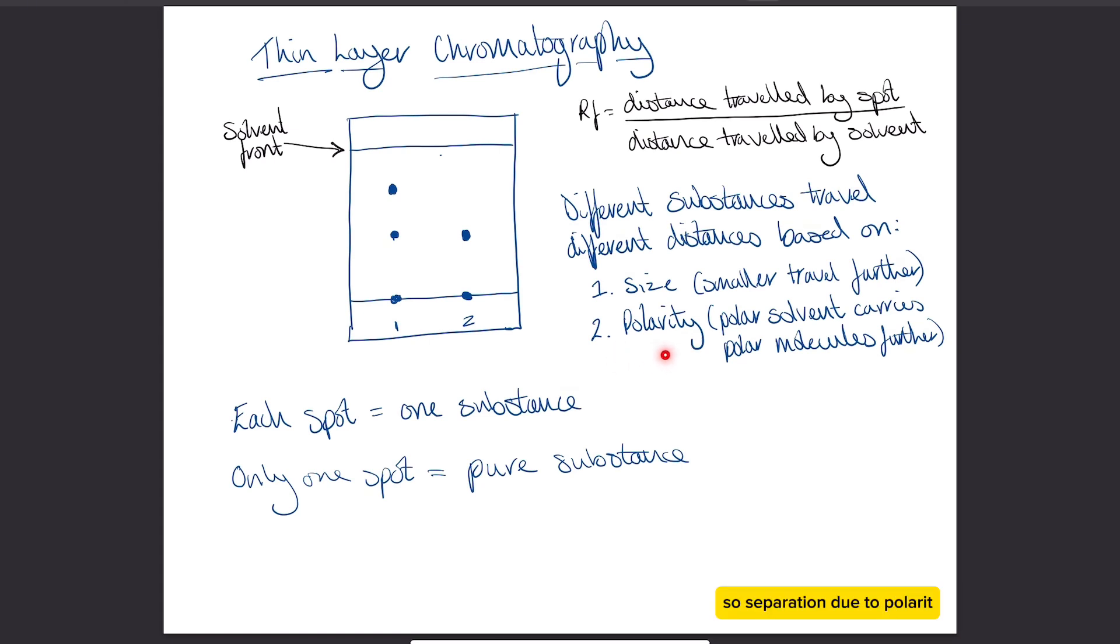Separation due to polarity is really dependent on what your solvent mix was. If your solvent mixture was polar, then the polar molecules will travel further, because as your polar solvent is traveling up the plate, it's going to carry those polar molecules with it because like dissolves like. The polar solvent is going to interact with the polar molecules. That then means that the non-polar molecules wouldn't move as far, so they'd be further down the plate.